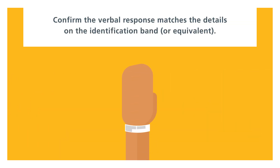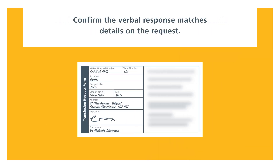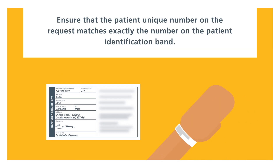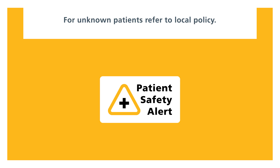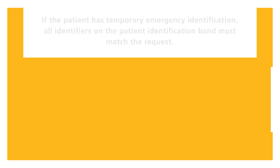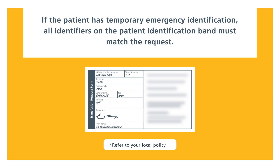Confirm the verbal response matches the details on the identification band, or equivalent. Confirm the verbal response matches details on the request. Ensure that the patient unique number on the request matches exactly the number on the patient identification band. For unknown patients, refer to local policy. If the patient has temporary emergency identification, all identifiers on the patient identification band must match the request. Refer to your local policy.